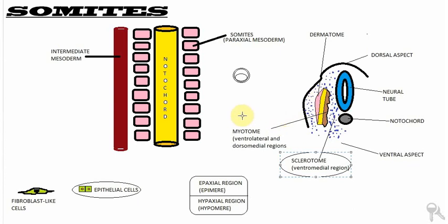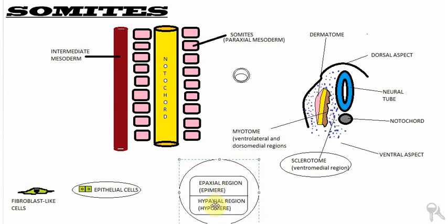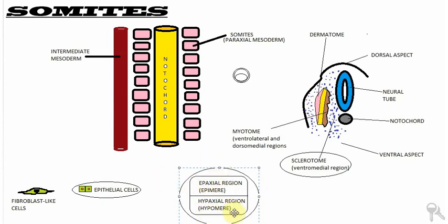Now we come to the myotome. The myotome is composed of two different regions. We have an epaxial region or the epimere, and we have a hypaxial region or the hypomere, as you can see in this diagram. The epaxial region is located more dorsally and is going to form the intrinsic muscles of the back. The hypaxial region is located more ventrally and will form the muscles of the anterior and lateral body wall. Regarding innervation, the epimere is going to be innervated by the posterior primary ramus of the spinal nerves — we'll study that when studying the structure of the spinal nerves.